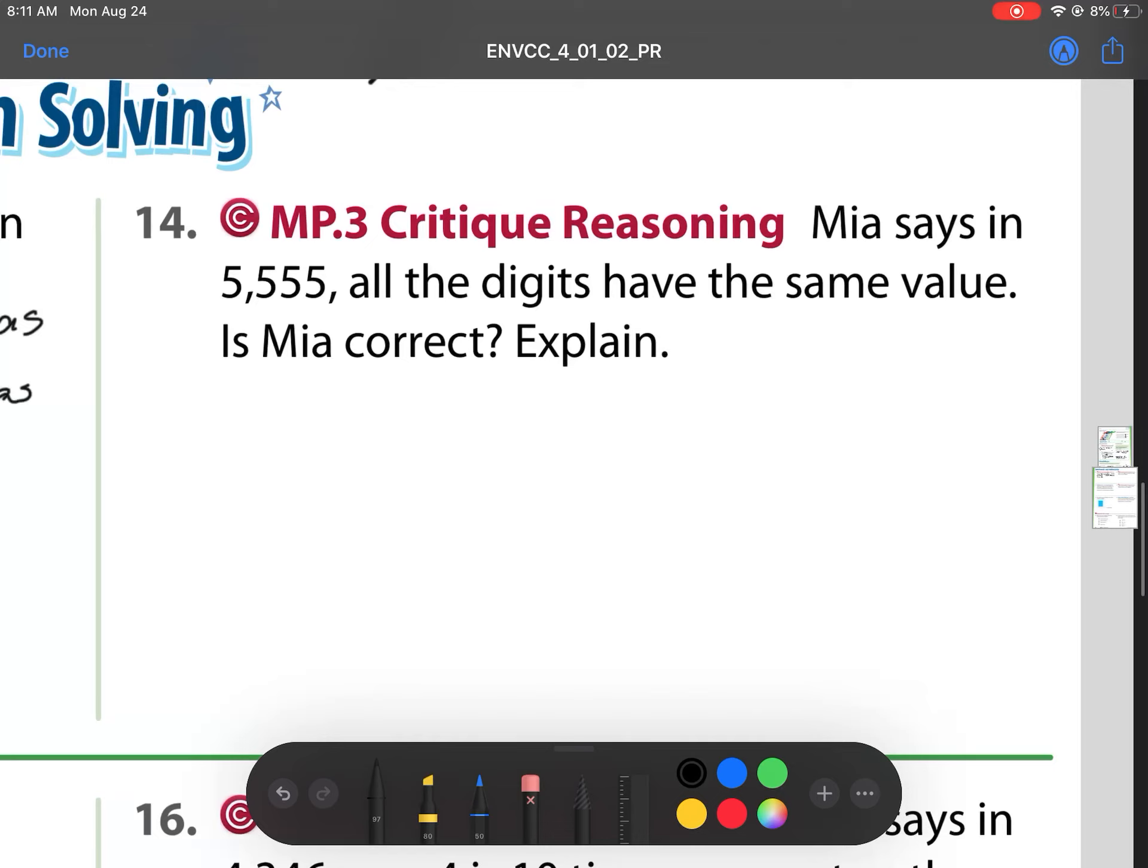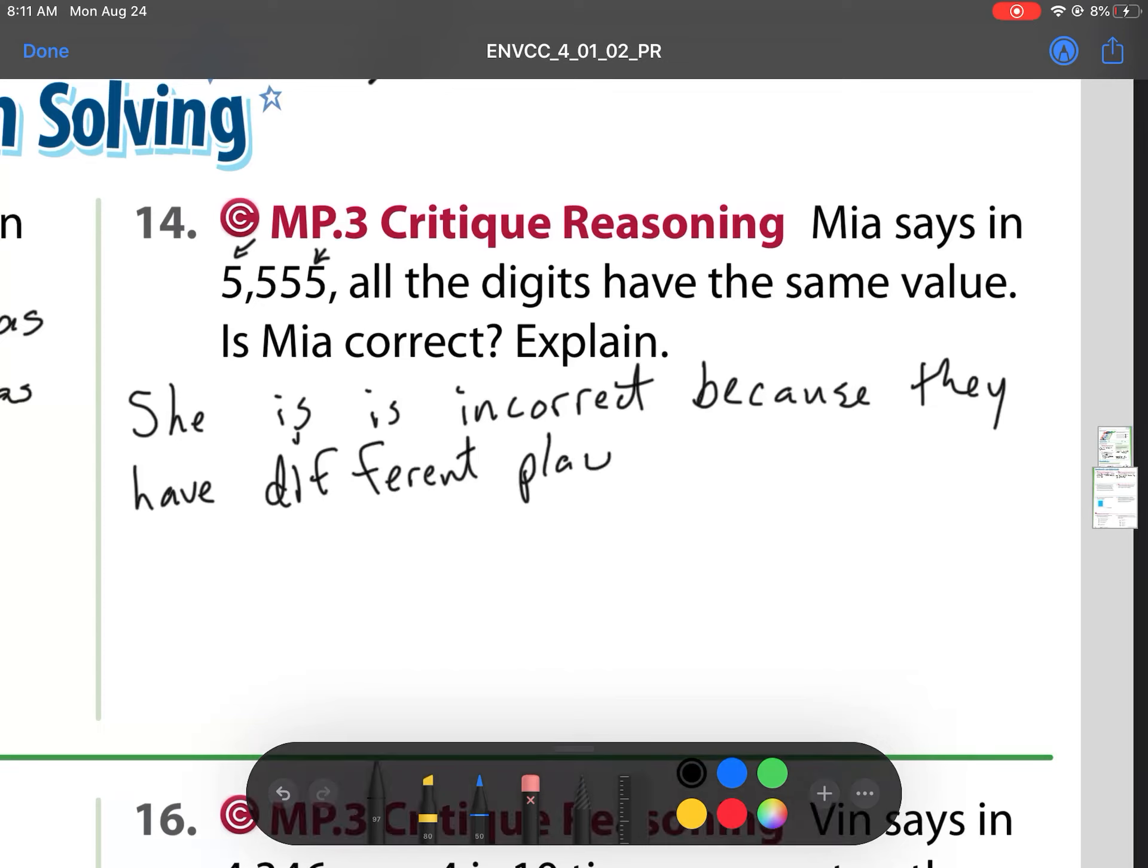On to number 14. Mia says in 5,555, all the digits have the same value. Is she correct? Let's check. Is 5 the same as 5,000? No. They're the same digit, but they don't have the same value. So that's what we're going to state. She is incorrect. And then to show that example, we just showed that 5,000 is not the same as 5 or 50.